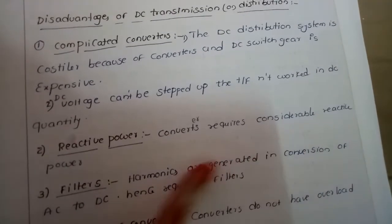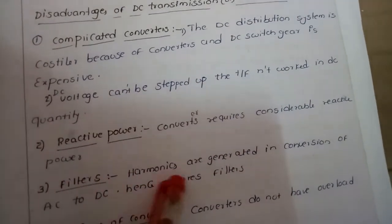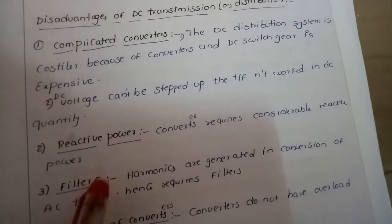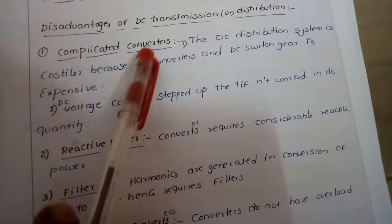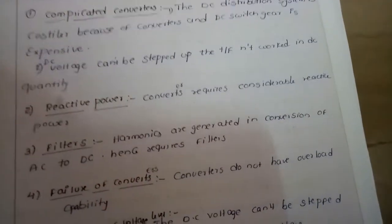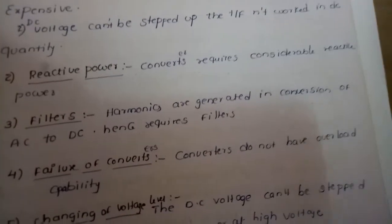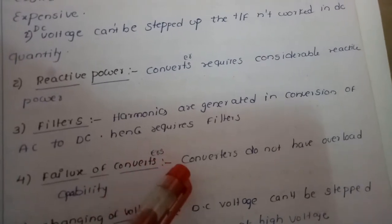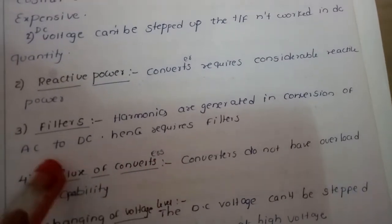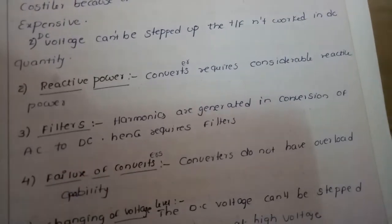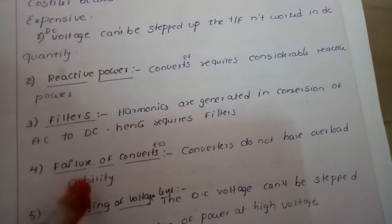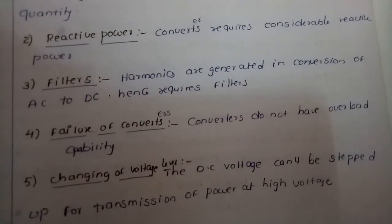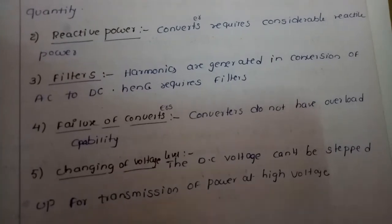Further disadvantages of DC transmission include the need for considerable reactive power and harmonic filters, which are costly. Converters do not have overload capability and failures may be more frequent. Change of voltage level is also not easily possible in DC transmission.